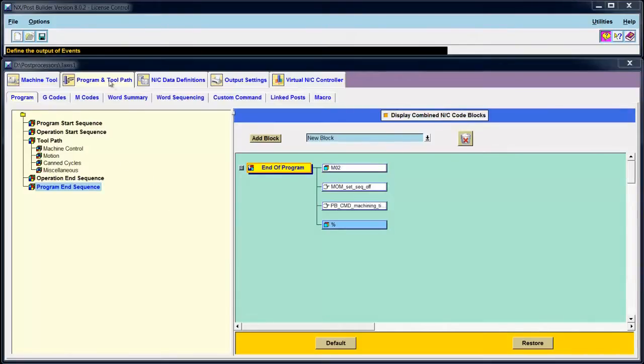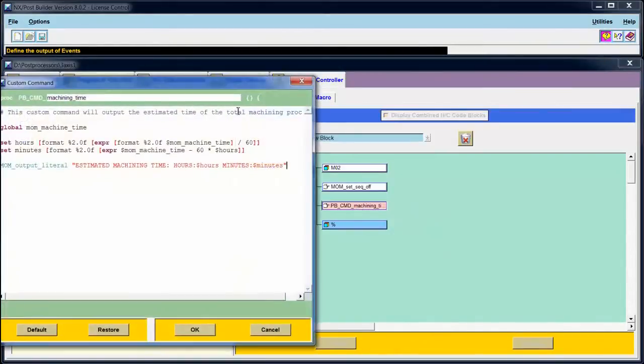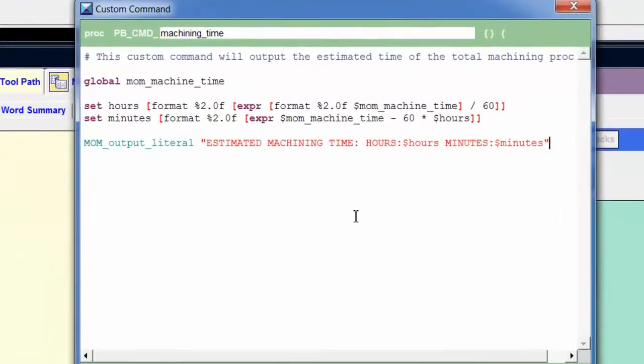I'm inside of the Program and Toolpath tab in the Program Sub tab, and I'm at the Program End Sequence where we created this custom command in the previous lesson about outputting the machining time. I'm going to open up that custom command. And what I would like to do is only output the variable hours if hours is greater than zero. So let's build an if statement to do that.